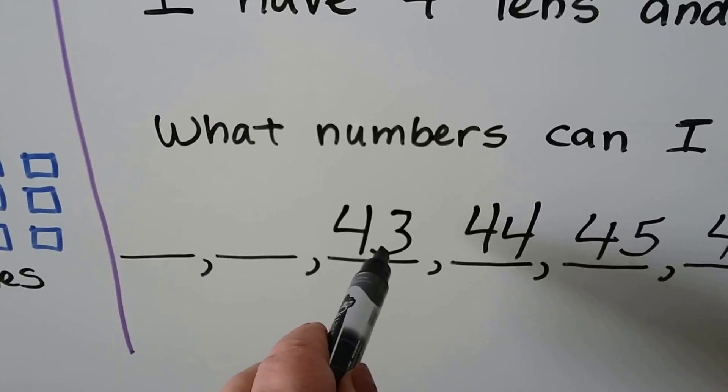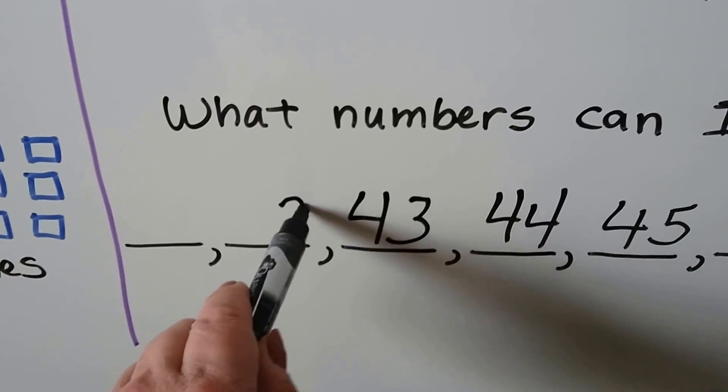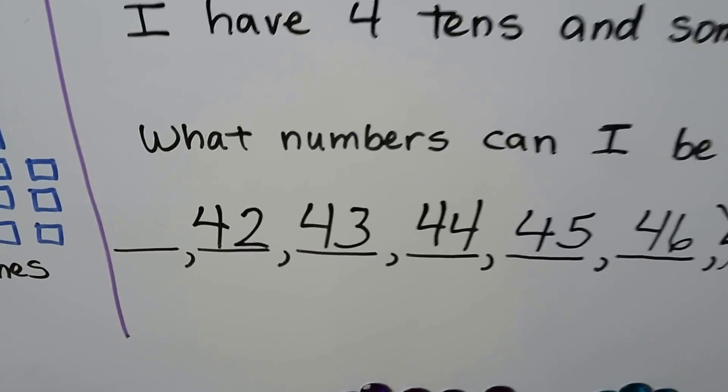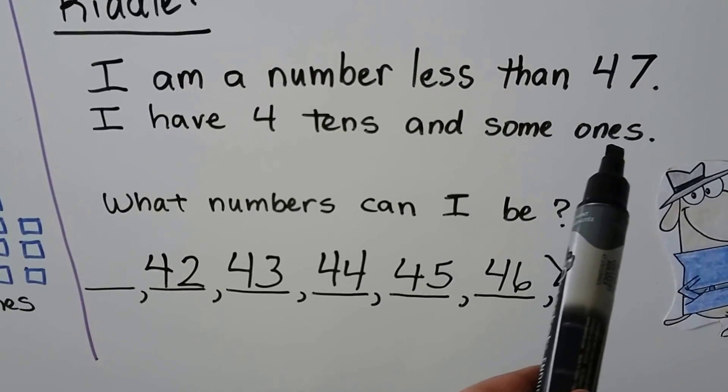The next one smaller would be a 2, wouldn't it? And it has four tens. Now, it said that it has some ones.